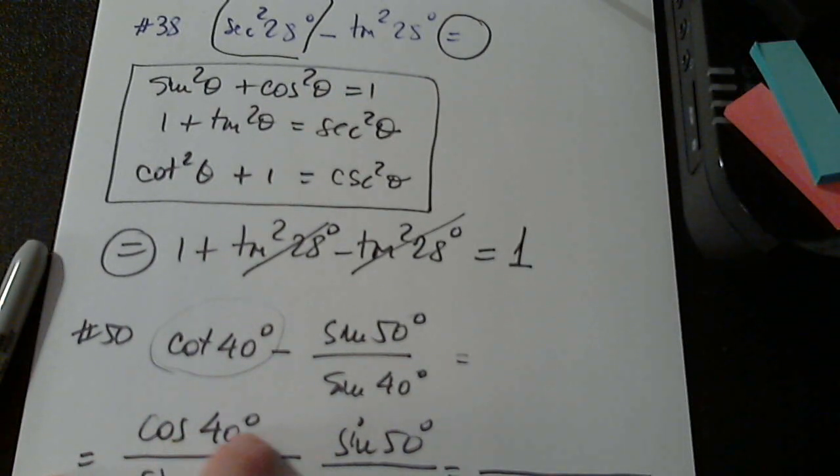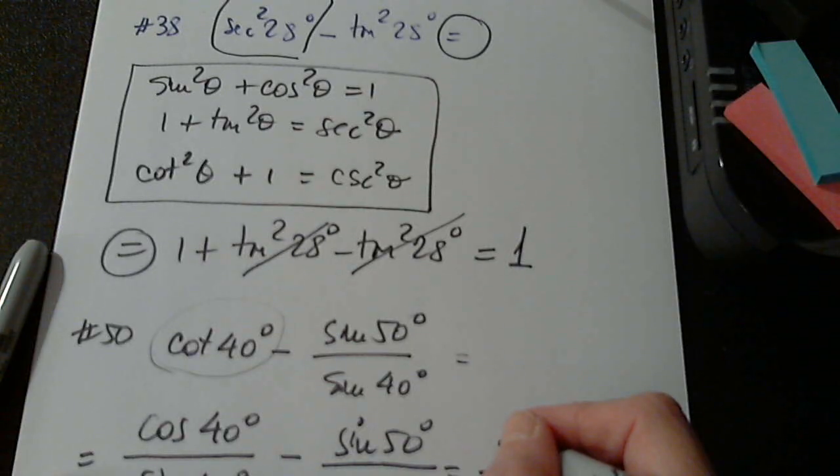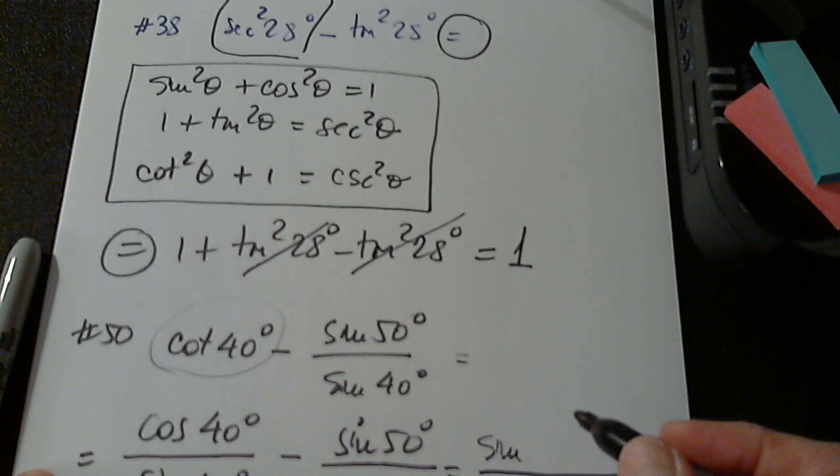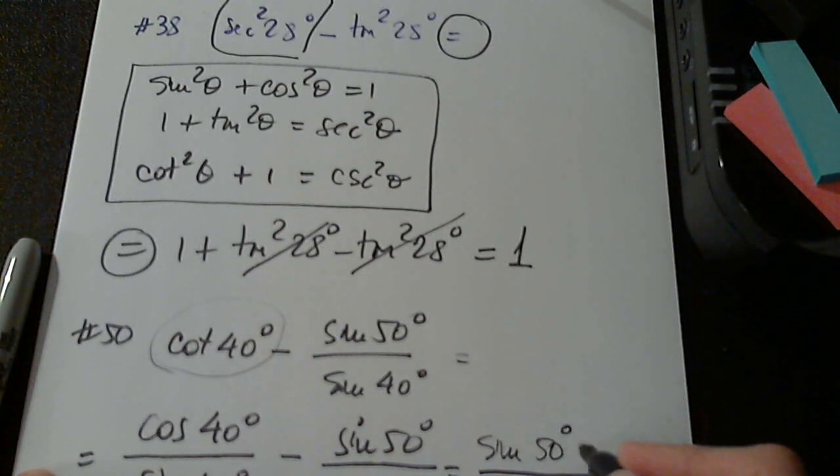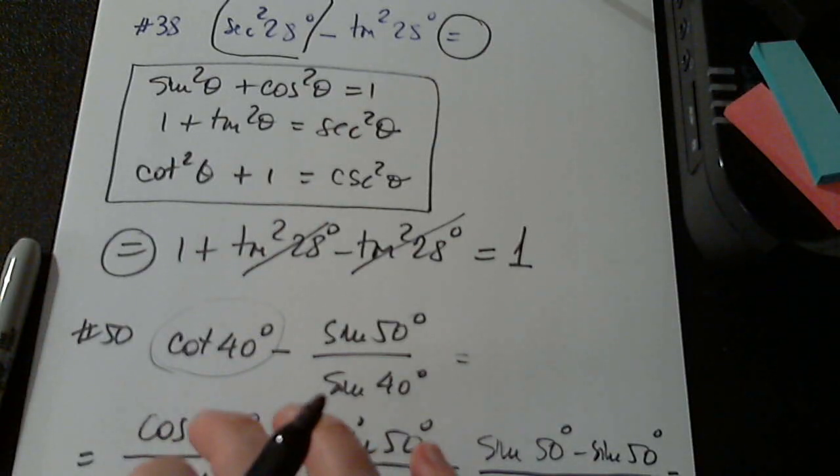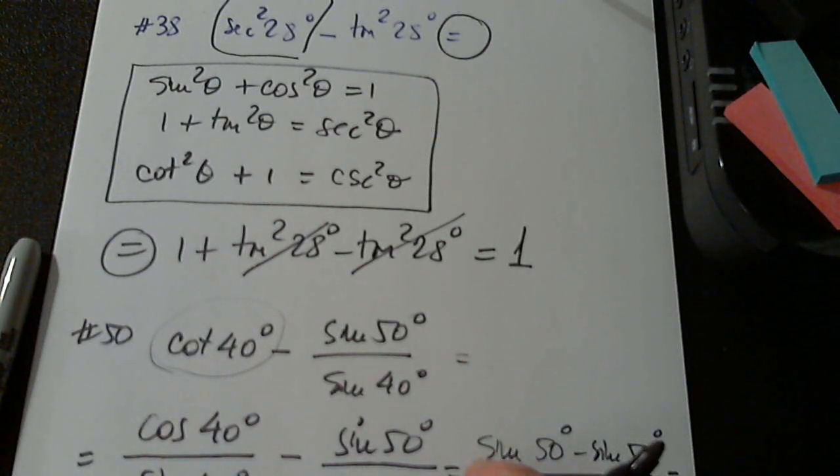I'm going to change this into what? What should I change this into? From cosine 40 into? Sine 50. 50, exactly. Minus sine 50. So what is the answer? Because cosine 40 degrees is the same with sine 90 minus 40 degrees, which is 50.